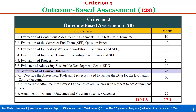Then 3.5, evaluation of projects, carries 20 points. Then 3.6, evidence of addressing sustainable development goals (SDG), carries 10 points. Then 3.7, attainment of course outcomes, carries 25 points. This is divided into 3.7.1, describe the assessment tools and processes used to gather data for the evaluation of course outcomes, carrying 5 points, and 3.7.2, record the attainment of course outcomes of all courses with respect to set attainment levels, carrying 20 weightage. The next main sub-criterion is 3.8, attainment of program outcomes and program specific outcomes, which carries 25.